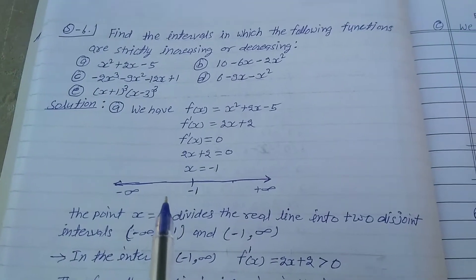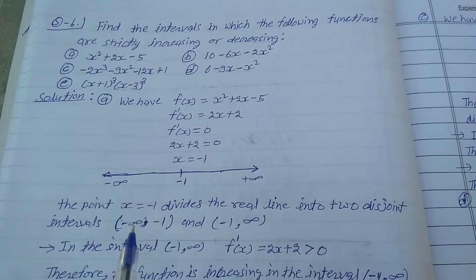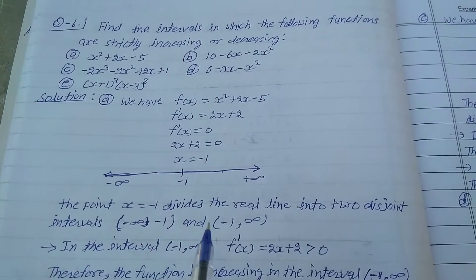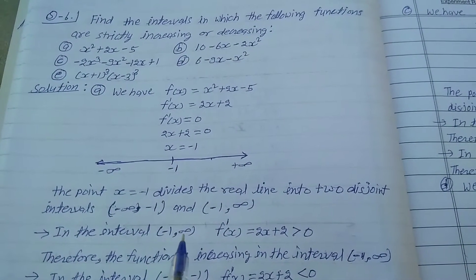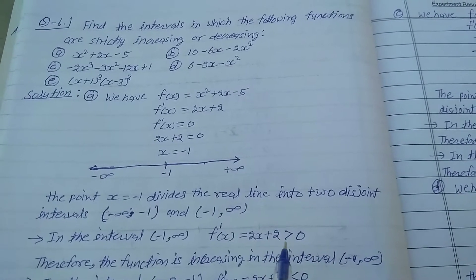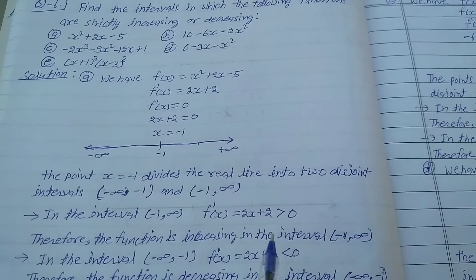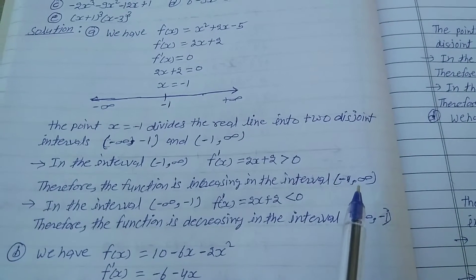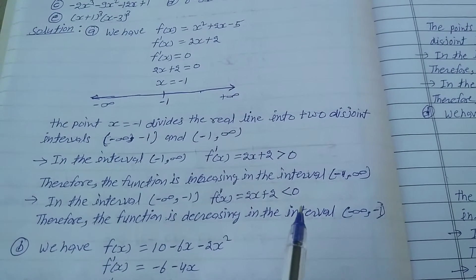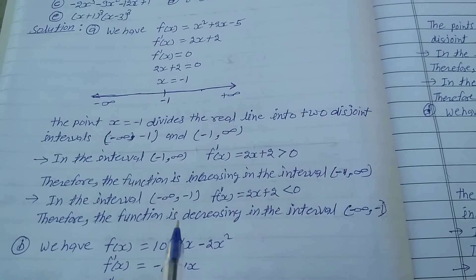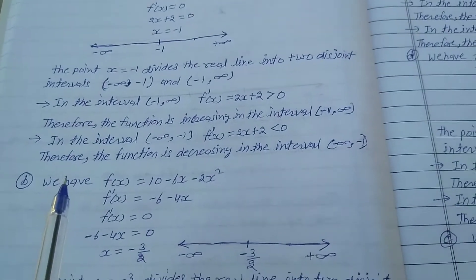The point x = -1 divides the real line into two disjoint intervals: (-∞, -1) and (-1, +∞). In the interval (-1, +∞), f'(x) = 2x + 2 > 0, so the function is increasing. In the interval (-∞, -1), f'(x) = 2x + 2 < 0, so the function is decreasing.